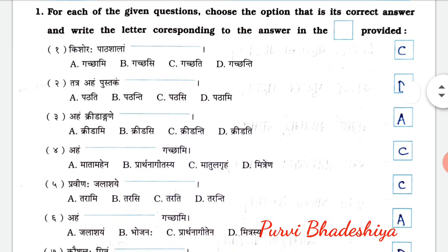The very first exercise: for each of the given questions, choose the option that is its correct answer and write the letters corresponding to the answer in the box provided. So the first: Kishorah Patsalam blank — the correct answer is C, Gachati.